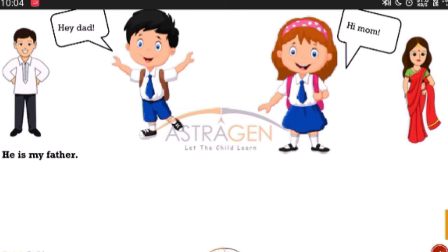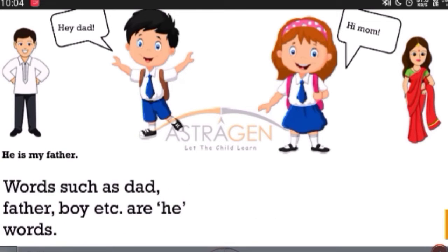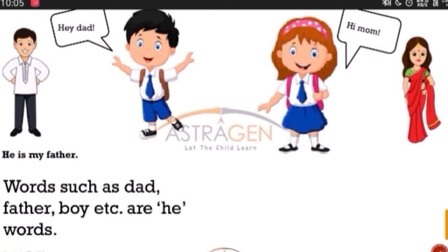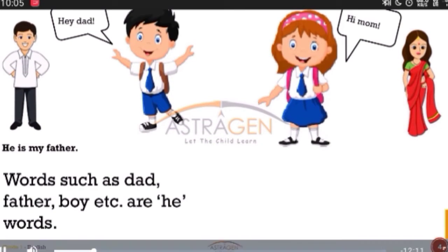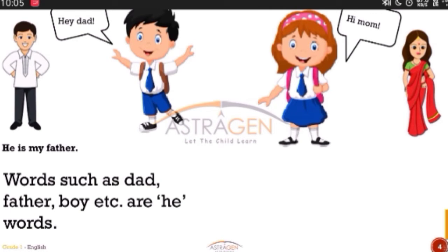Now I get it. Words such as dad, father, boy, etc. are all called he-words. That means they are used for boys and men. Father is a man because he is bigger, he is elder — he is not a little baby or a little boy, so you don't call him a boy, you call him a man. So dad, father, boy, or brother — all of them are called he-words.